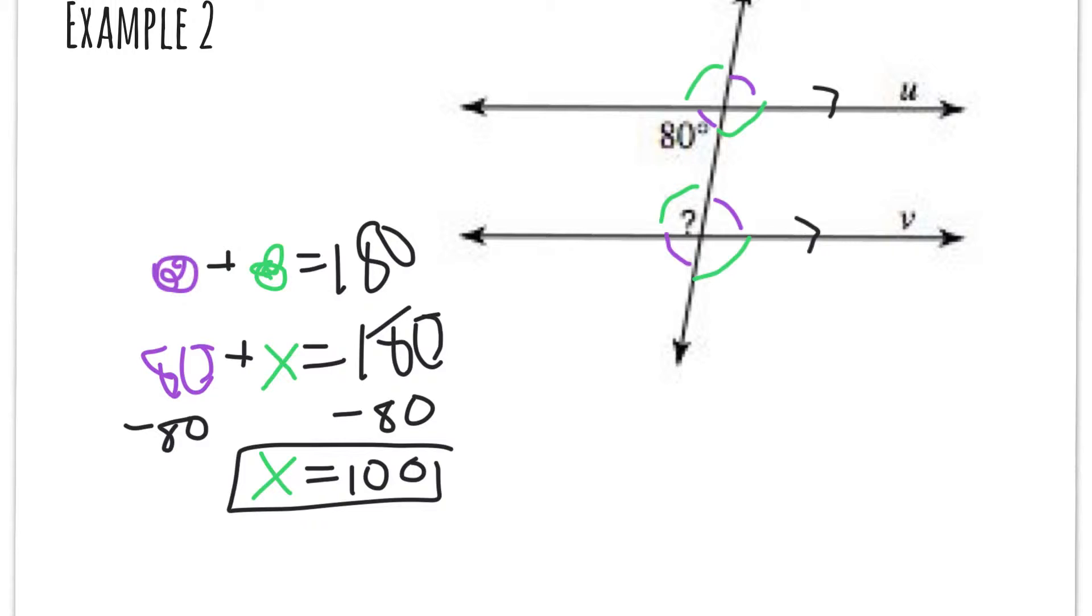Again, the trick is to color code everything if you need that, which is completely okay. I do that too. And then go through and see what their relationships are. It's always either going to be congruent or supplementary.